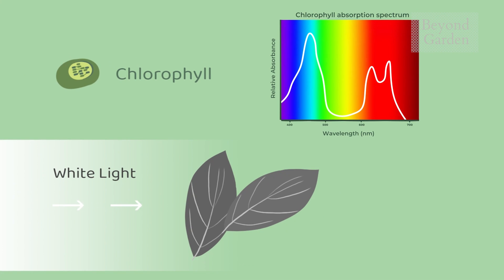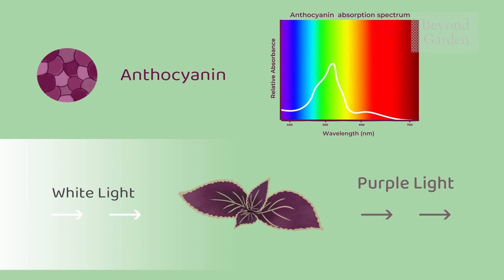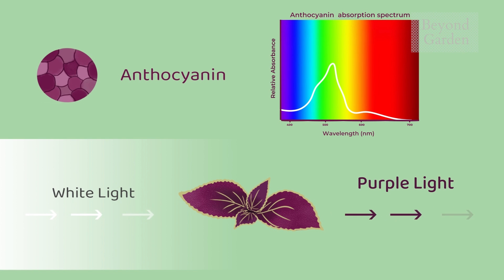What you see on screen is the absorption spectrum of chlorophyll — it reflects the green portion and everything else is absorbed. Likewise, there's another pigment called anthocyanin, which reflects only the purple part and some of the blue part of the spectrum, while absorbing everything else. That is the technical reason why we see green.